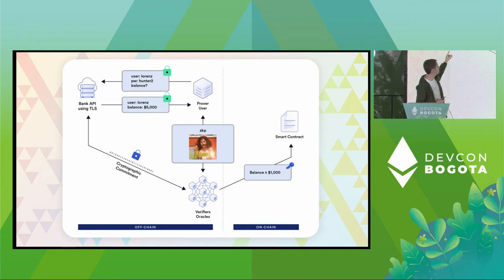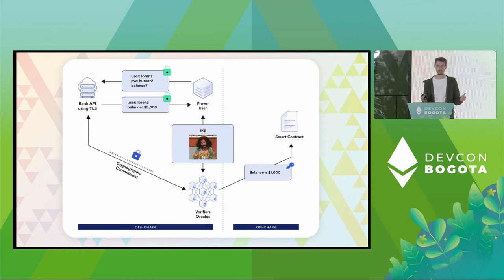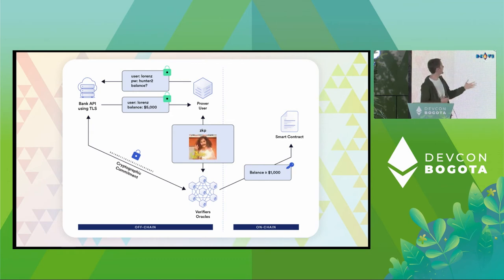I'm going to say: hey, I'm Lawrence, my password is hunter2, what's my balance? And the bank API will respond: Lawrence, your balance is $5,000 — which I do not want to reveal to the verifiers or to the contract.